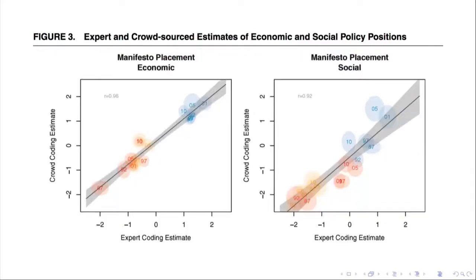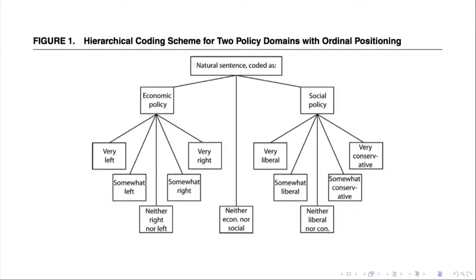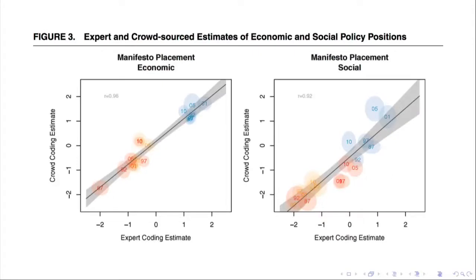They sent these out through a crowdsourcing service similar to Mechanical Turk, which also had speakers of many different languages because many of these documents are written in the languages of the countries where they're created. Here are results from the UK. Here are the expert coding estimates and here are the estimates that come from the crowd. What I want you to focus on is how these two things line up very well—the results from the crowd are very similar to the estimates that come from experts on both economic policy and social policy.